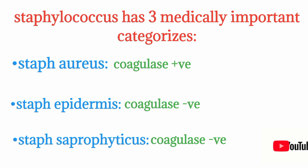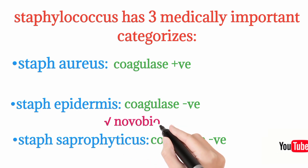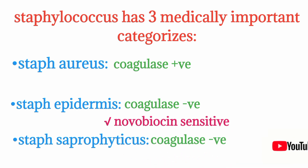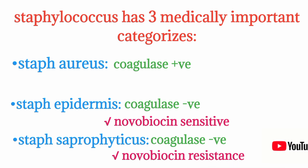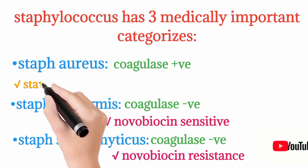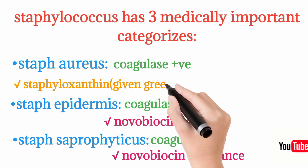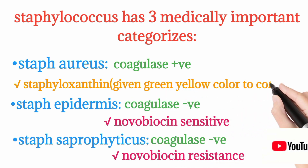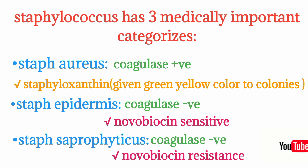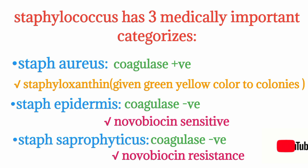Staph epidermidis and Staph saprophyticus, both coagulase negative, are differentiated on the basis of novobiocin sensitivity. Staph epidermidis is novobiocin sensitive and Staph saprophyticus is novobiocin resistant. Additionally, Staph aureus produces an important pigment known as staphyloxanthin, which gives a yellow-green color to its colonies.